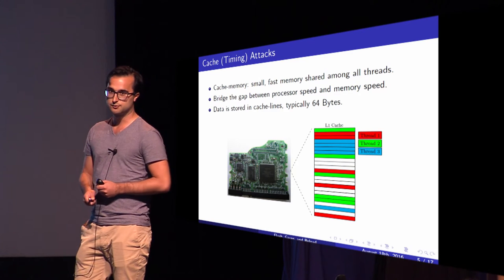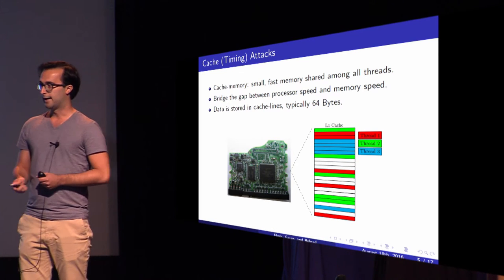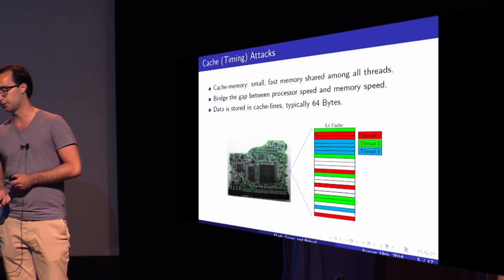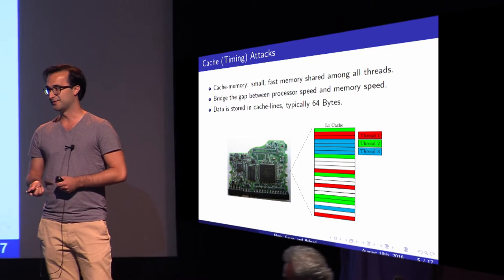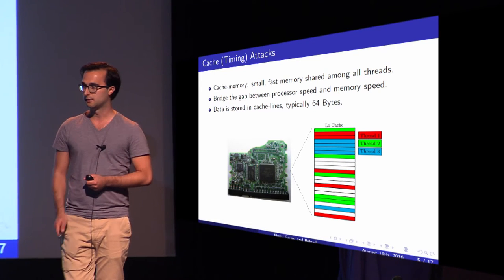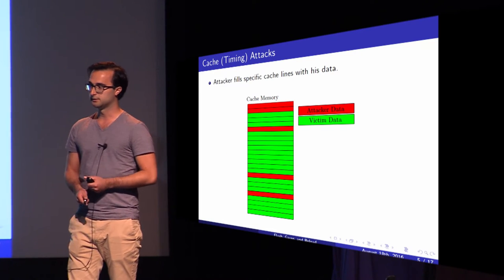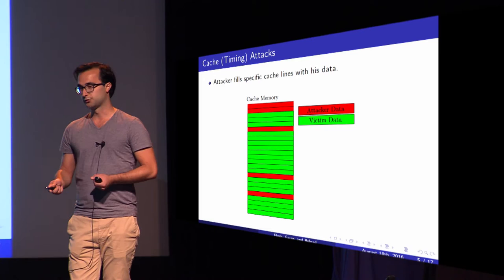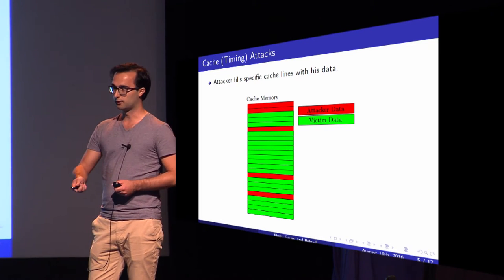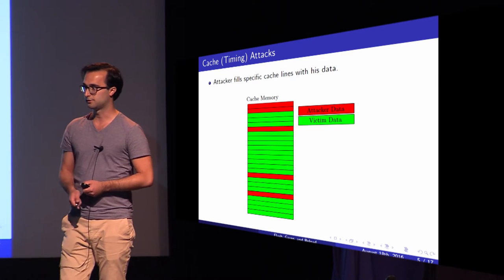Data is typically stored in cache lines, and here you see three threads that share the L1 cache. All these threads compete for the same resources — they compete for the same memory lines. Data is typically stored in cache lines, and these are typically 64 bytes big. An attacker can fill specific cache lines of shared memory with his own data, or flush it. In this example, the top two cache lines are filled with attacker data.